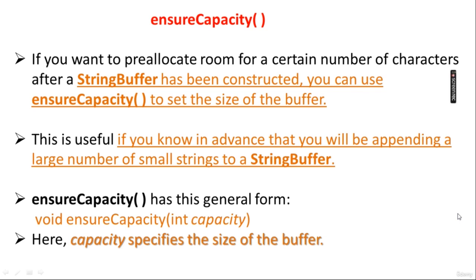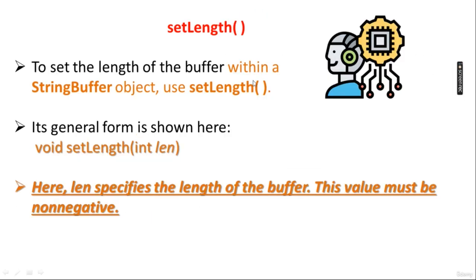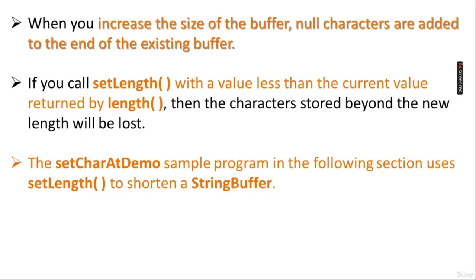Here, capacity specifies the size of the buffer you are going to pre-allocate. Then, setLength — to set the length of the buffer within a StringBuffer object, use the setLength method. The syntax is: void setLength(int length). Here, length specifies the length of the buffer. This value must be non-negative, because you cannot have a negative buffer length.